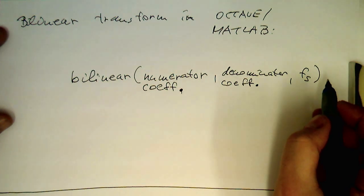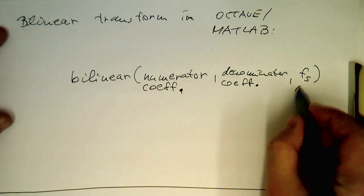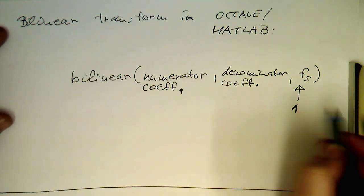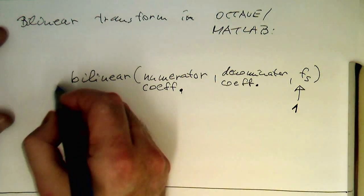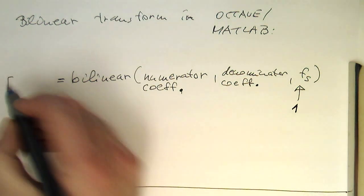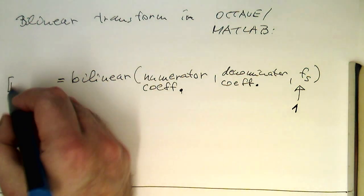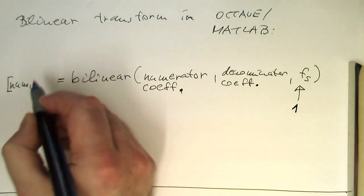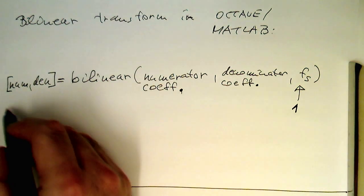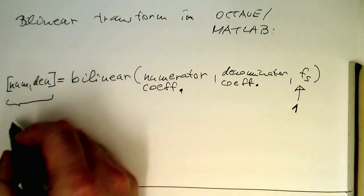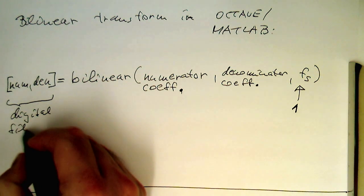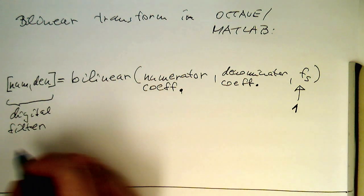And as we know, usually what we do is we are setting fs to 1 to have this as normalized frequencies here. And then the output is essentially our array for numerator and denominator for our digital filter coefficients.